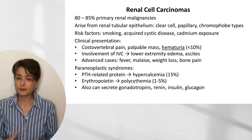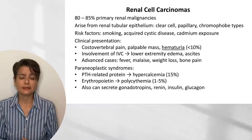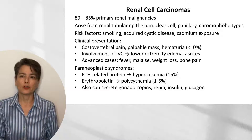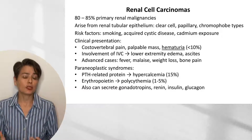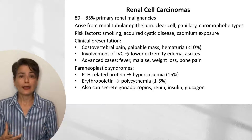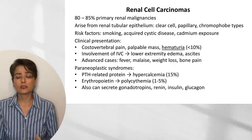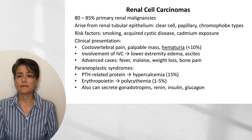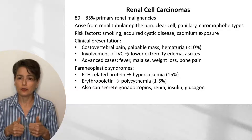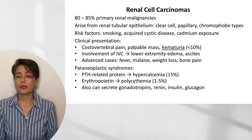Now let's talk about renal cell carcinomas — about 80–85% of primary renal malignancies. Another to consider is transitional cell carcinoma of the renal pelvis at about 8%. Renal cell carcinomas arise from the renal tubular epithelium. Risk factors include smoking, long-term hemodialysis leading to acquired cystic disease of the kidney, and cadmium exposure, either environmental or occupational.